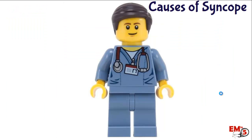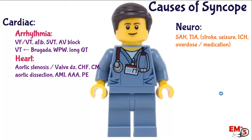The two big scary causes are either cardiac or neurogenic. For cardiac, it's usually arrhythmias, a massive heart attack, or valve issues. For neurology, strokes can sometimes cause syncope — more likely ones with intracranial hemorrhage. You can also see it with subarachnoid hemorrhage, where there's a brief onset of headache, the patient passes out for a second before waking up again.